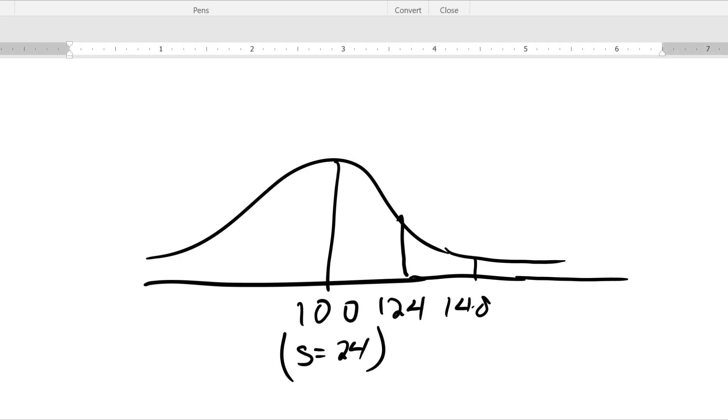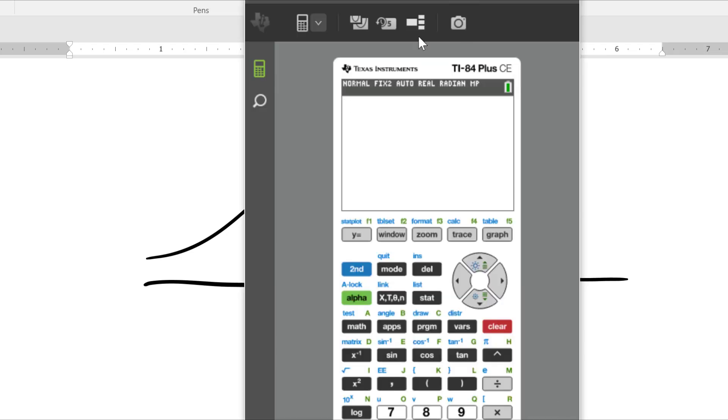So let's just use our calculator. And so it's 2.25 times that standard deviation, 24 in this case, plus the 100. Not that we need to do that, but that's what we're going to do. 154.